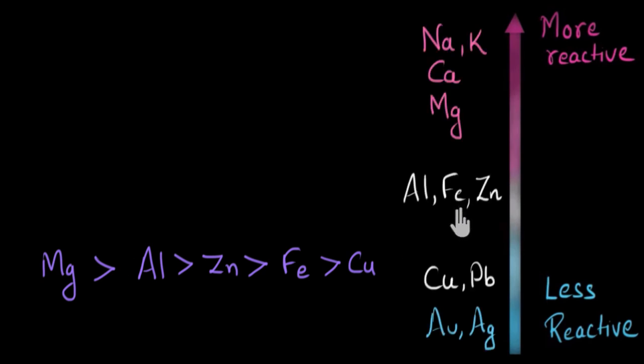But see, there was a problem with this ranking list. It wasn't very detailed. Like over here, you can see that aluminum, iron and zinc, they all are clubbed together at one rank. Whereas over here, copper and lead, they are also clubbed together at one rank. We don't know for sure which one is more reactive between them.